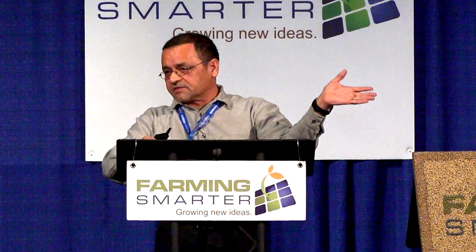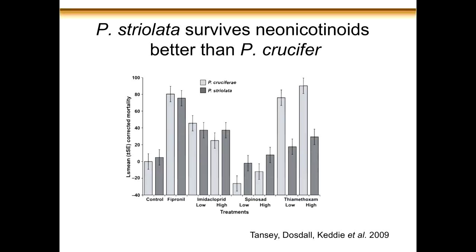There could be a couple of reasons for this shift. One is that we had a good series of wet years in the last decade, which could be one explanation. The other, quite interesting one, is that the striped flea beetle survives neonicotinoid insecticides better. I'll show you data published by one of Lloyd Dostal's postdocs — if you focus on thiamethoxam, the active ingredient in Helix, you can see the mortality for the striped flea beetle (striolata) is much lower compared to the crucifer flea beetle. So that could be another reason for the shift in dominance toward the striped flea beetle.